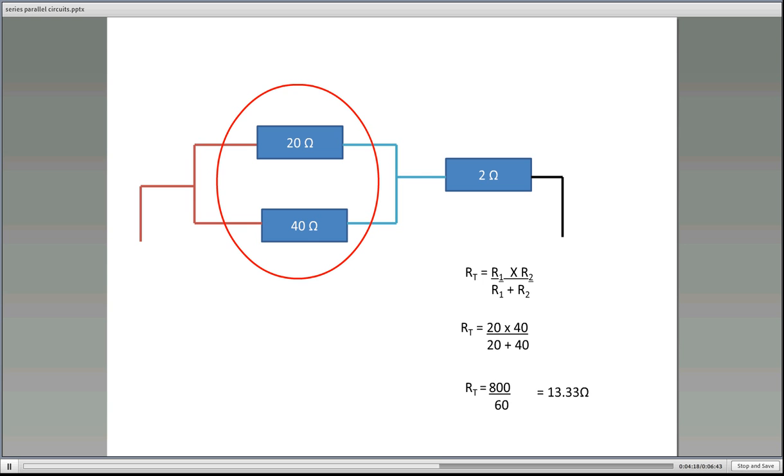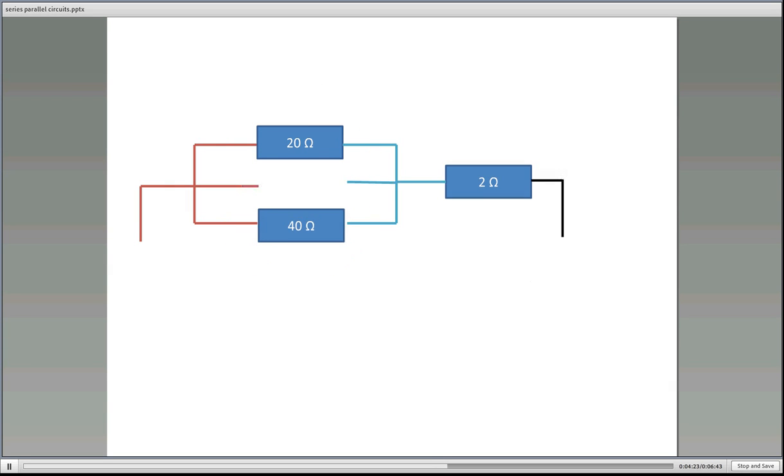You can certainly try the other way out, the one over one over RT, just to double check. OK, now that we know that, what we're going to do now is to make it one equivalent resistor. So there's our 13.33 ohms. We'll remove all the other cables. And that's our equivalent circuit now.